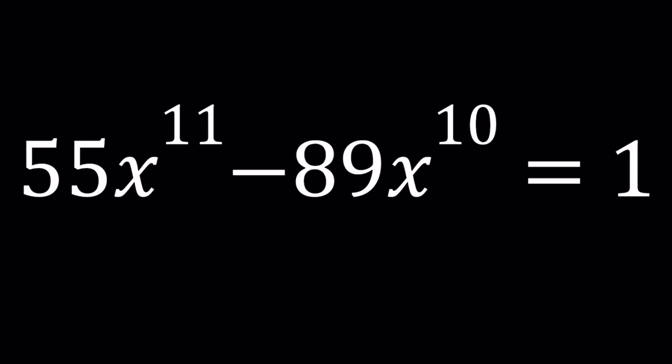Hi everyone. In this video, we're going to be solving an interesting equation with 11th powers. We have 55 times x to the power 11 minus 89 times x to the 10th power equals 1, and we're going to be solving for x values.